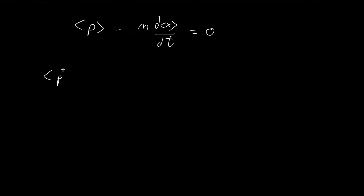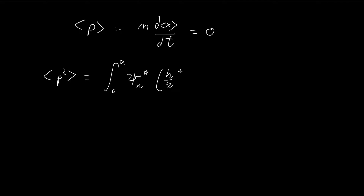The expected value of p squared is more complicated. In order to calculate this, we're going to have to revert back to basic principles. We have the nth stationary state, we take the conjugate — David Griffiths uses a star to signify the conjugate — and then we have the momentum operator squared, and then the nth stationary state.